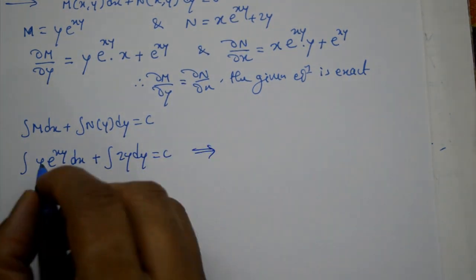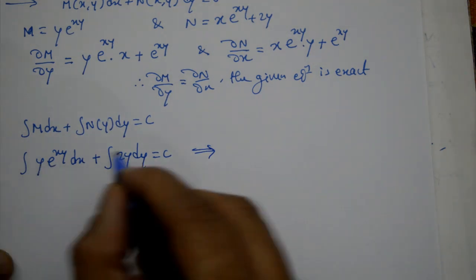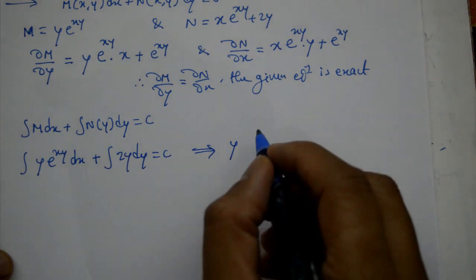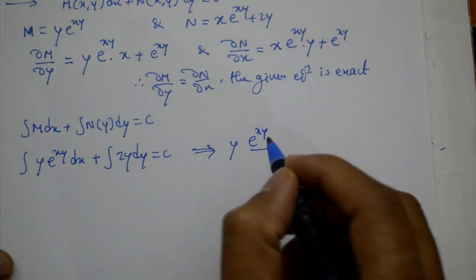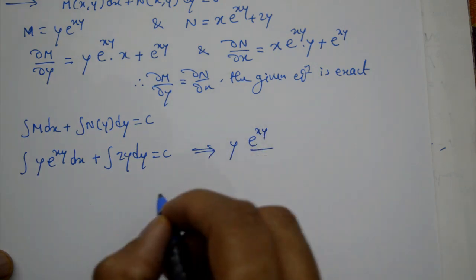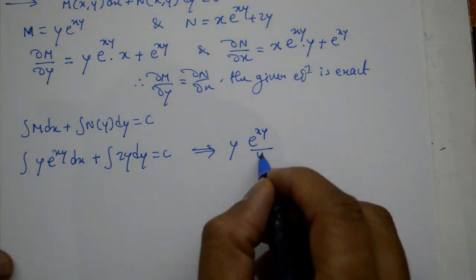Now, this is equal to, we'll do this. So y is a constant, we'll integrate this with respect to x. So e raise to xy divided by the constant after integration, e raise to xy divided by constant, constant is y, so we take y.